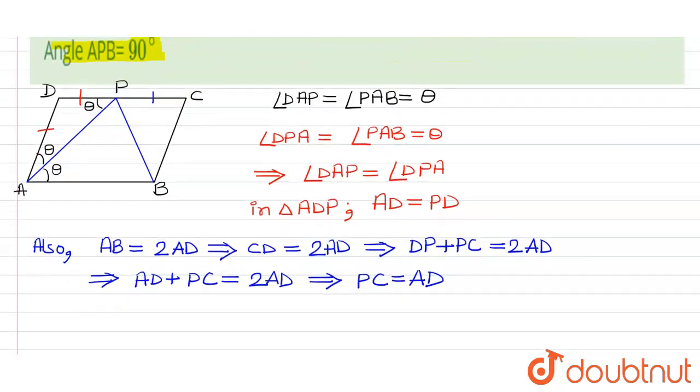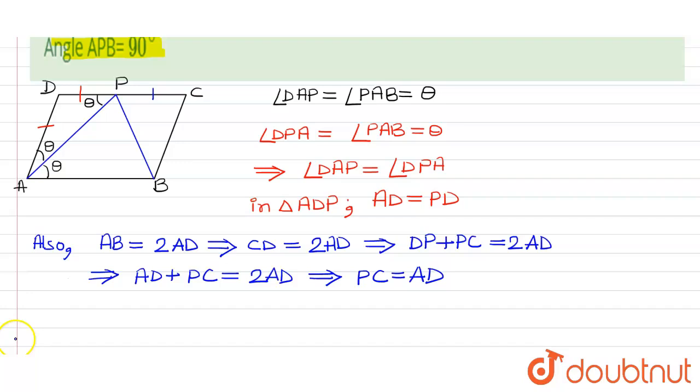Now we have AD is equals to BC, since ABCD is a parallelogram. So therefore, PC is equals to BC.